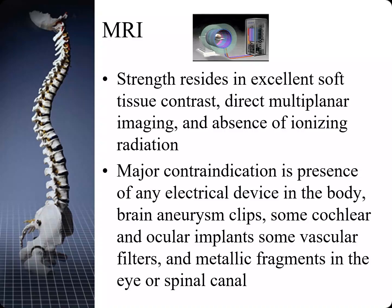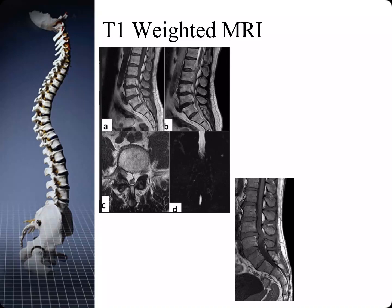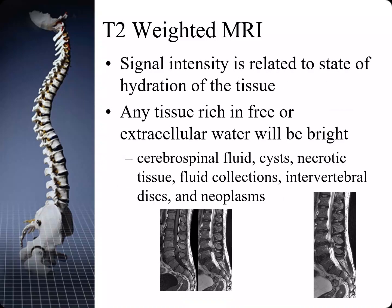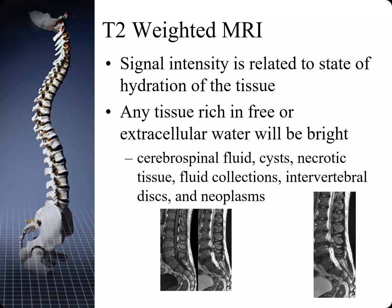The major contraindication for MRI is the presence of any electrical device in the body, brain aneurysm clips, or some cochlear or ocular implant device. T1 MRI signals have high or bright signal and they're good for delineating anatomic structures, whereas a T2-weighted MRI signal is related to the state of hydration of the tissue. Any tissue rich in free or extracellular water will be very bright. Cerebral spinal fluid, necrotic tissue, fluid collections, intervertebral discs, and neoplasms show up well.